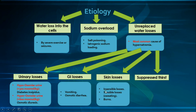Skin losses include insensible losses — water loss transdermally through diffusion — sensible losses such as sweating, and burns. All of these cause hypotonic fluid loss and therefore result in hypernatremia. However, with prolonged or severe sweating and burns, hyponatremia can result through the same mechanisms explained for vomiting and diarrhea.